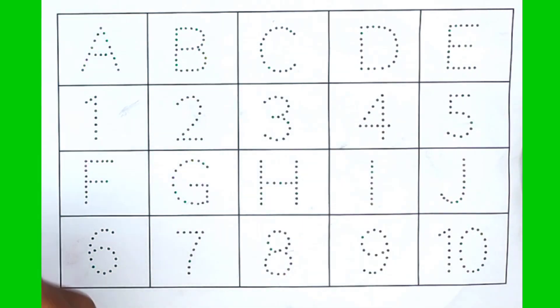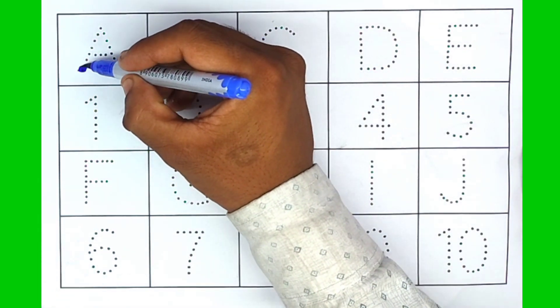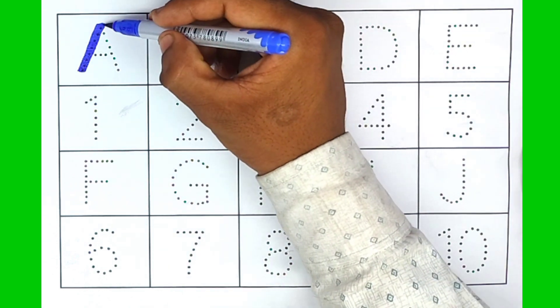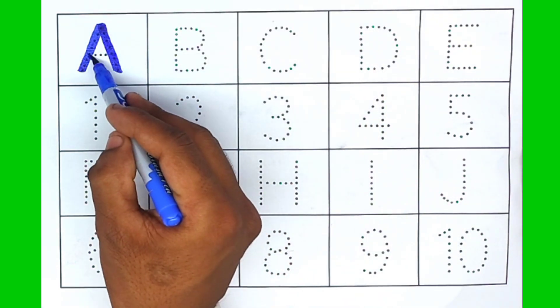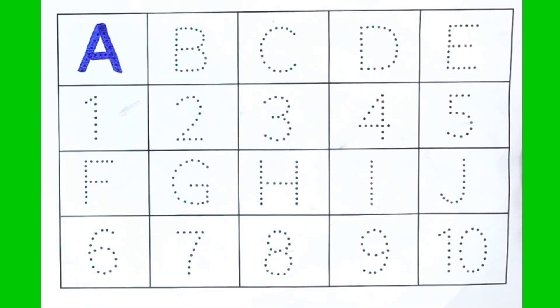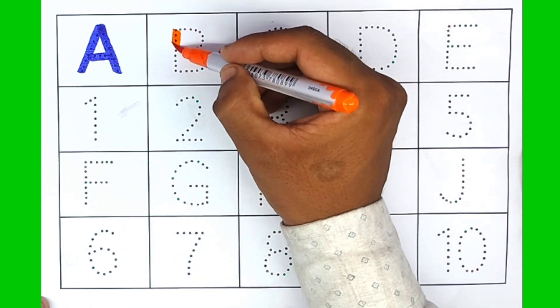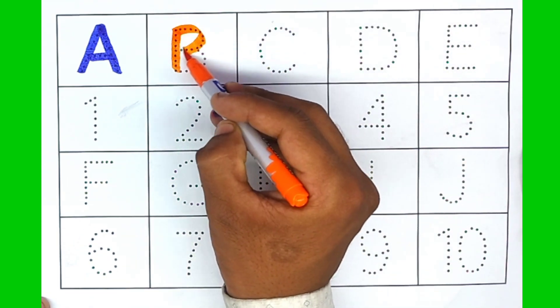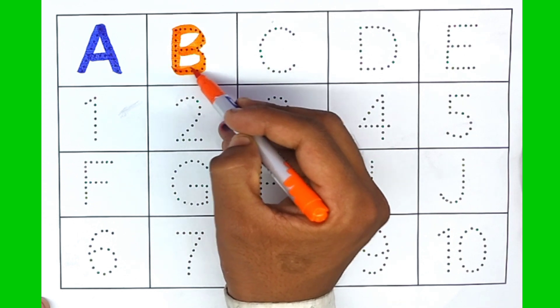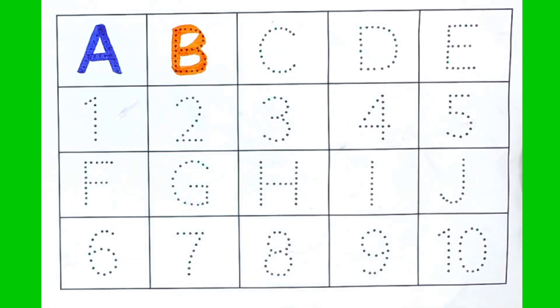A. A for apple. Blue color, orange color. B. B for ball.